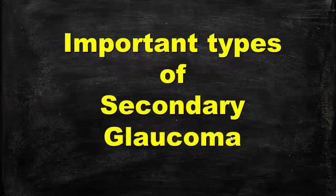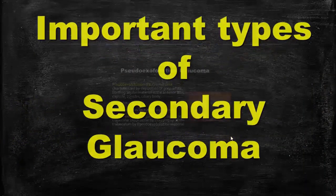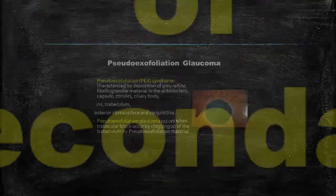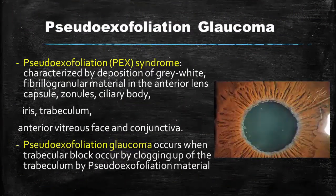Important types of secondary glaucoma. Pseudoexfoliation glaucoma: in pseudoexfoliation syndrome, it is characterized by the deposition of gray-white fibrogranular material on the anterior lens capsule, in the zonules, in the ciliary body, in the iris, trabecular meshwork, anterior hyaloid surface, and in the conjunctiva. In this photo, we can notice the presence of pseudoexfoliation material at the pupil margin and on the anterior lens capsule.